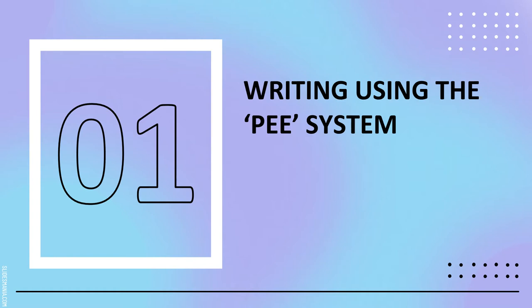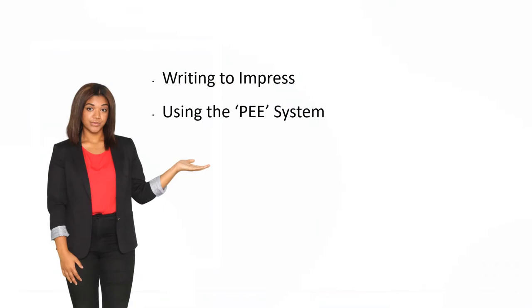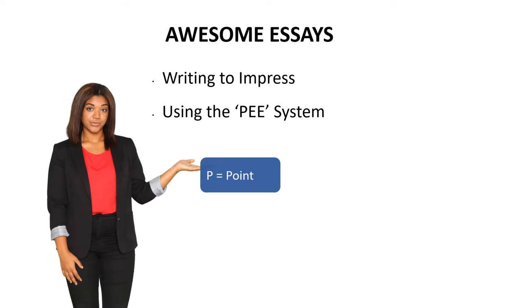First up, we're going to look at writing using the PEE system. The PEE system is an acronym for something that you need to recall while you are going through your writing activity. PEE is going to first of all help you to write to impress. When the reader of your essay sees how you have guided them effectively through the answer, they're going to be so impressed once you use the PEE system.